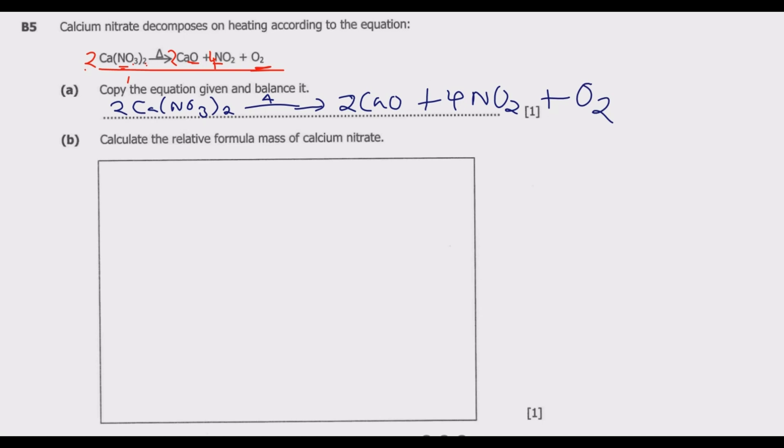Then question B. Calculate the relative formula mass of calcium nitrate. So relative formula mass, the same as relative molecular mass of this calcium nitrate. What you do is we just need to go to the periodic table and divide. So what's the mass number of calcium?